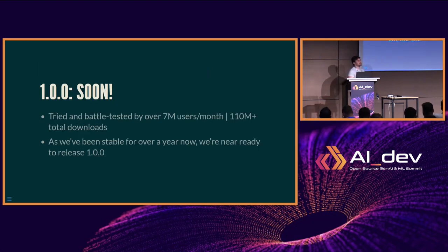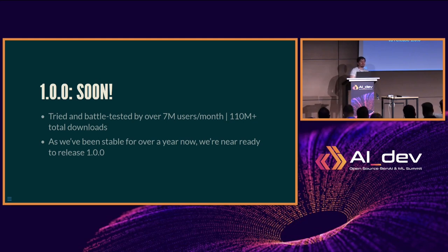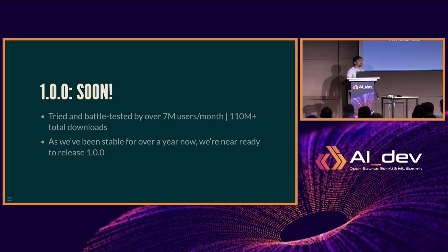We're nearing a 1.0 release — it's been two and a half to three years in the making. At this point we have seven million users per month and over 110 million downloads. Everything is fairly stable, we're going to let you run and test everything, do some small changes, and then stabilize the API. It's been a very long journey we didn't expect to take off as much as it did before the LLM boom, and it's been super exciting to see how far it's come.